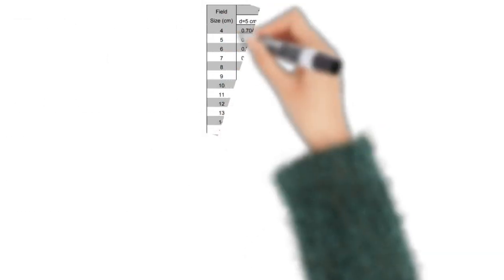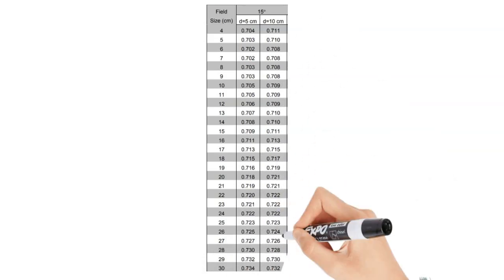Here's a nice example of a wedge factor table for a 15-degree wedge. These are all along the central axis. You can see field size increases as you move down, and wedge factors are listed at different depths. Generally, as you increase field size, the wedge factor goes up, and as depth increases, the wedge factor also goes up, at least until you get really deep.